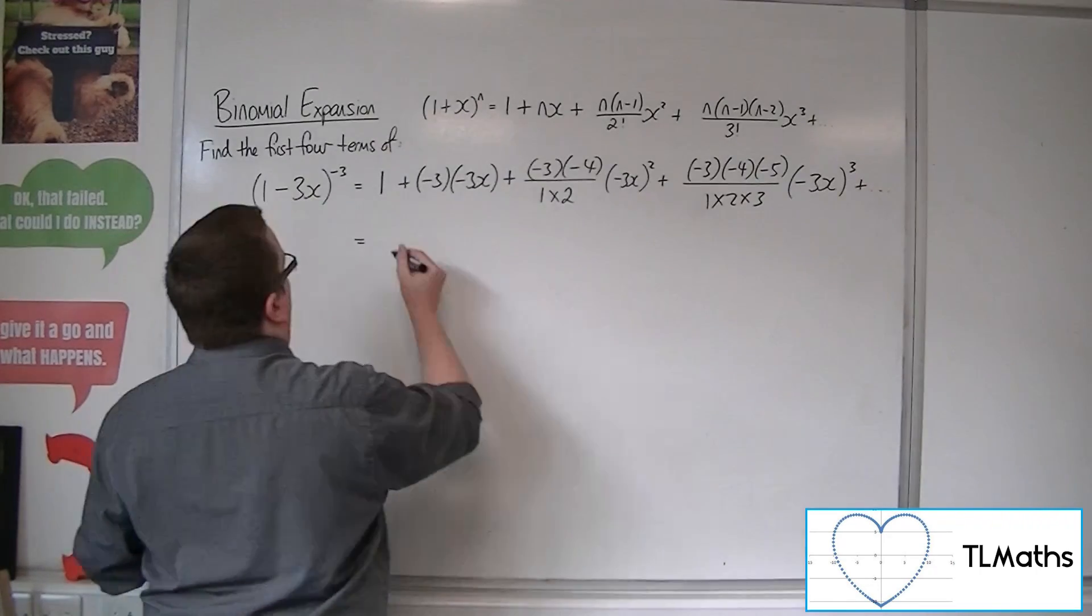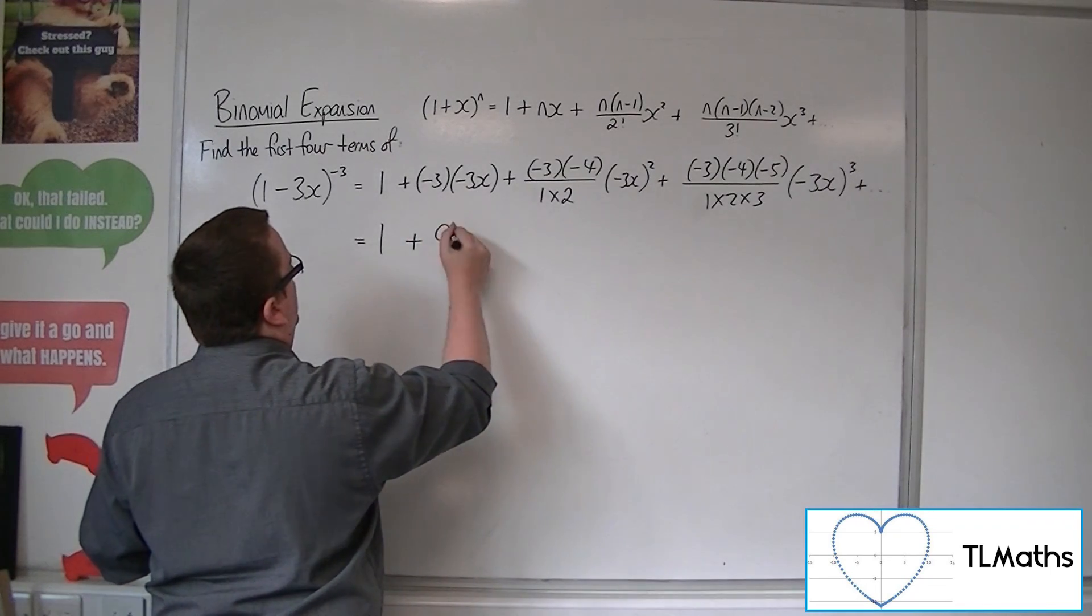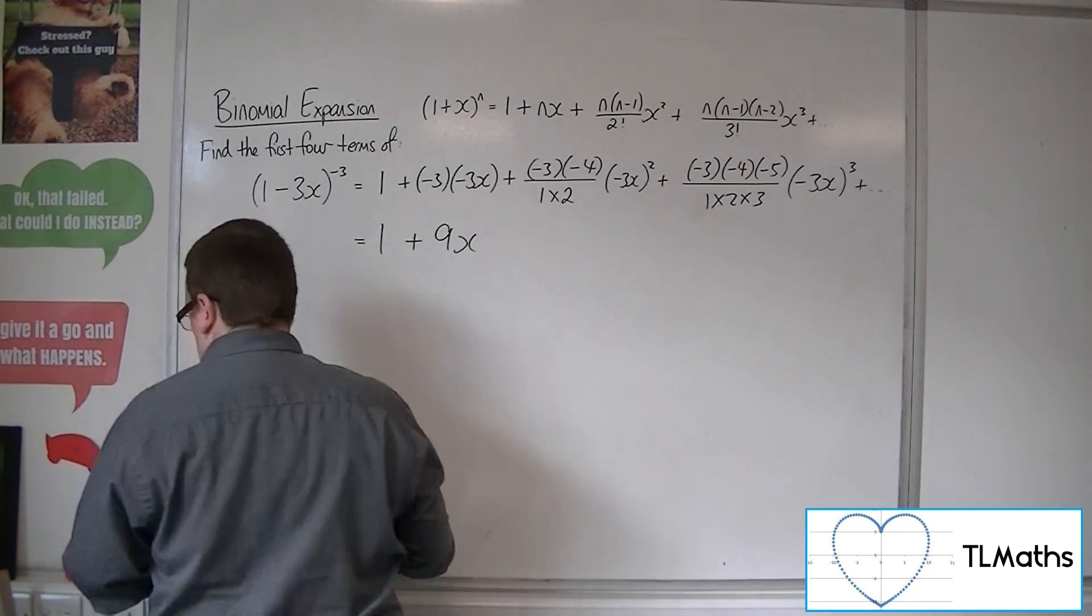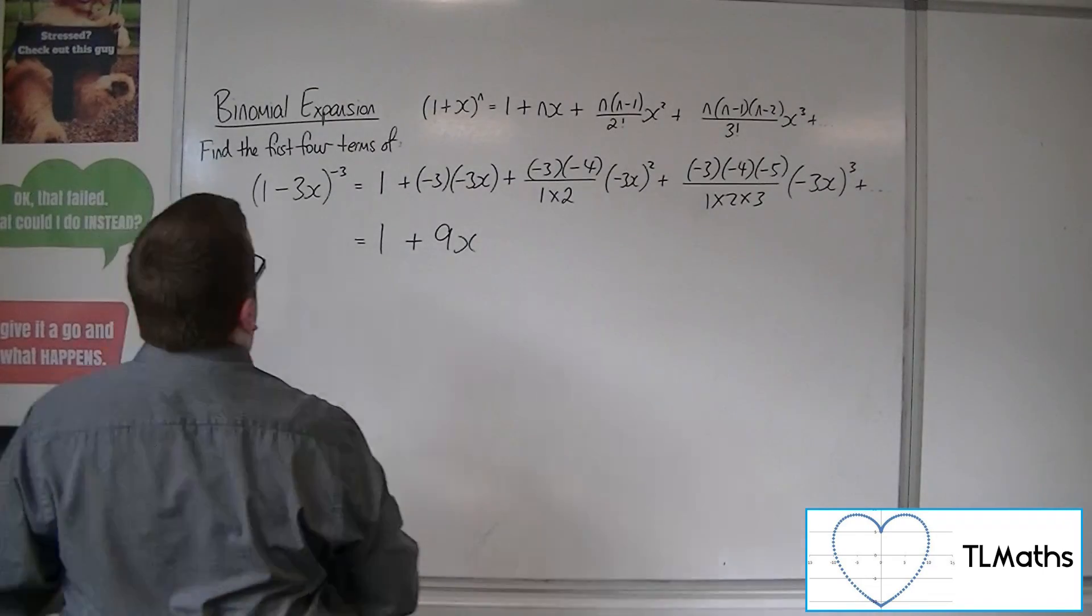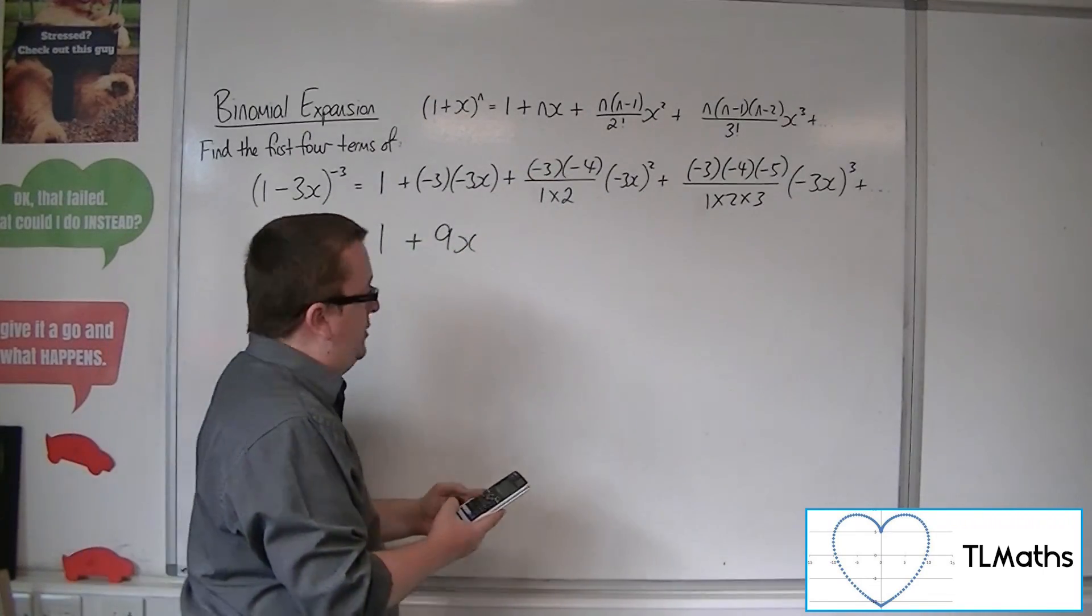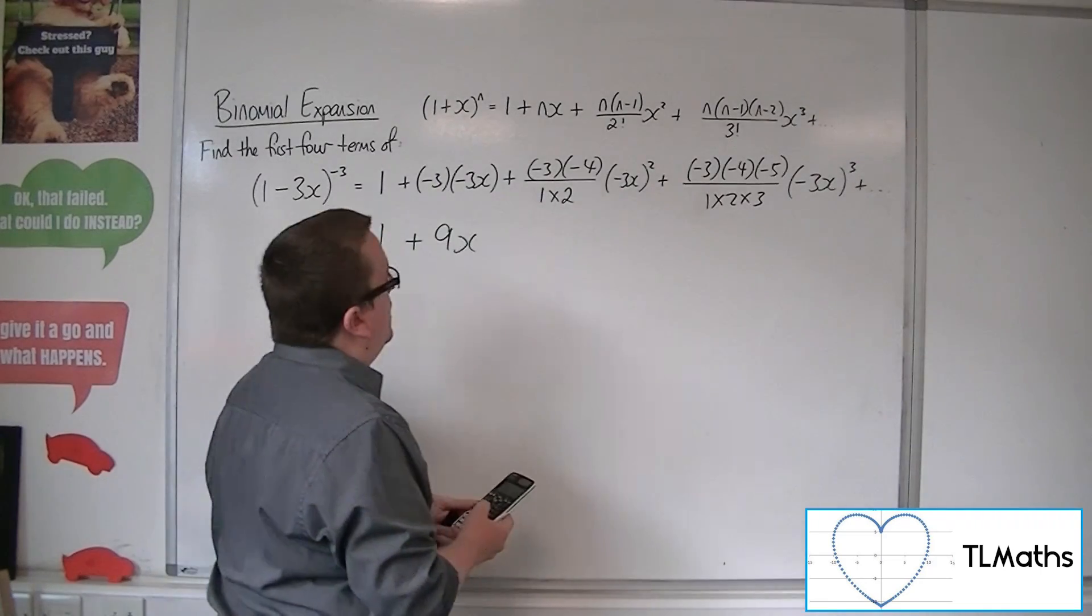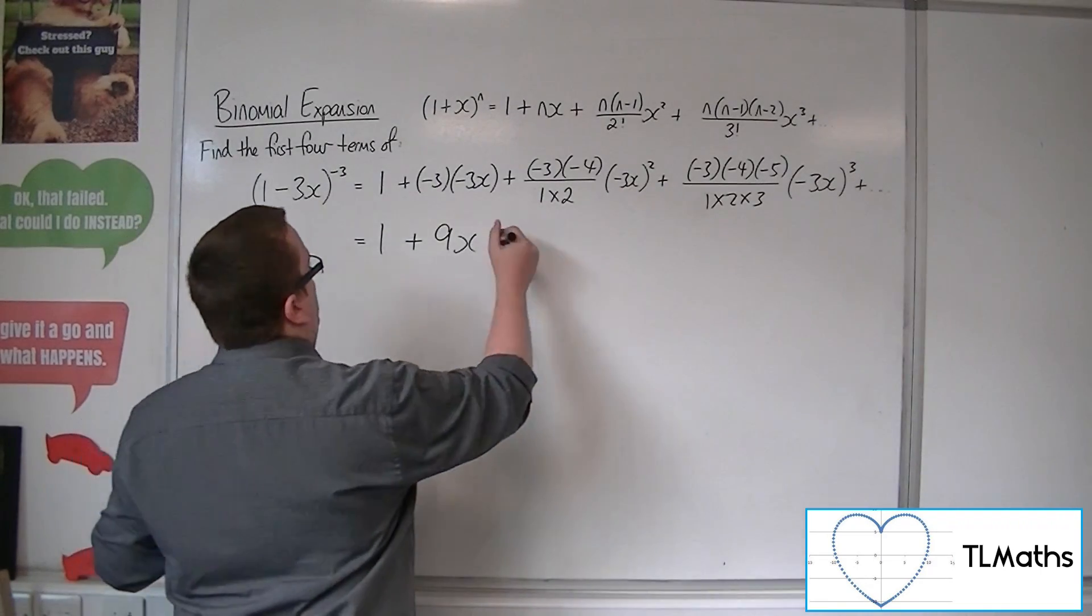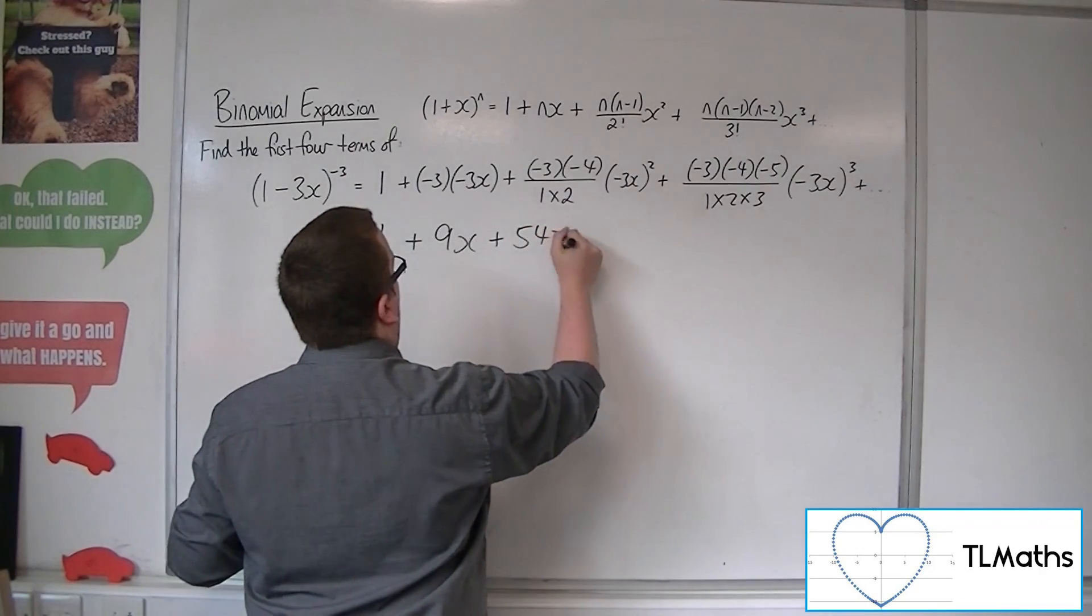So we've got 1 plus 9x. I'm now going to resort to a calculator. So we've got 3 times 4 divided by 2 times by 9. So 54. So we've got 54x squared.